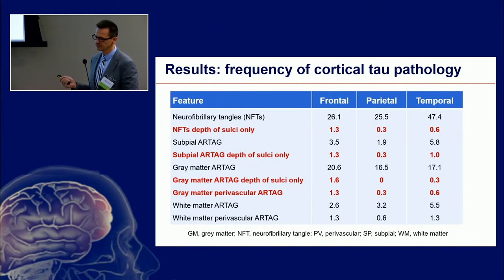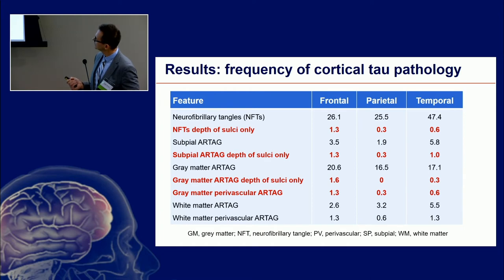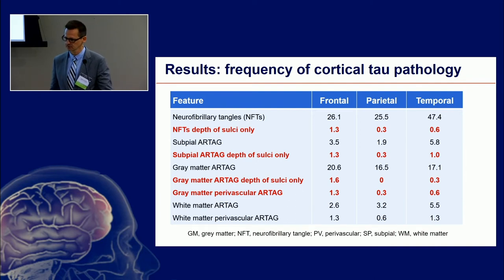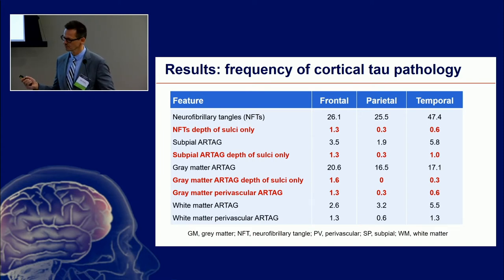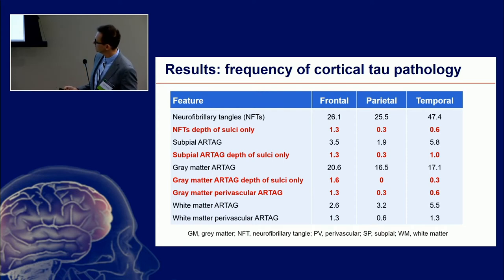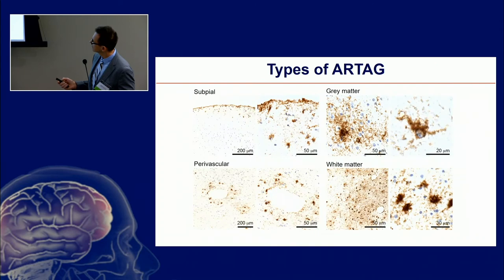This means that people above 75 walking in the street in a district in Vienna: 1.3% of them have neurofibrillary tangles only in the depth of the sulci, and about the same amount have astrocytic pathology only in the depth of the sulci. Very few have gray matter ARTAG — meaning astrocytes in the gray matter. Notably, neurofibrillary tangles anywhere in the cortices is much higher. Under the microscope, you can see subpial astrocytes, gray matter astrocytes, and white matter and perivascular astrocytes.